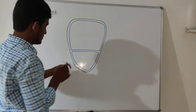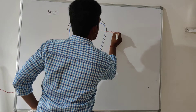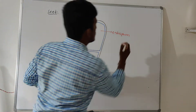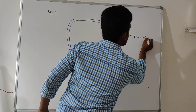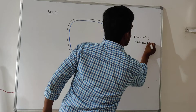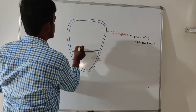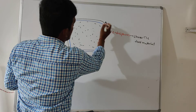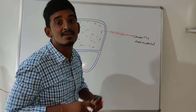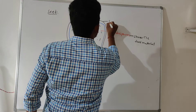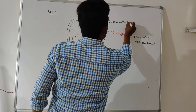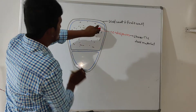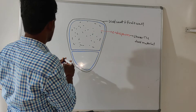The monocotyledon seed has mainly two compartments: a large compartment and a small compartment. The large compartment is called the endosperm. The main function of the endosperm is to store food material. In monocotyledon seeds, the seed coat and the fruit wall (pericarp) are fused together. The endosperm is separated from the embryo portion by one layer.